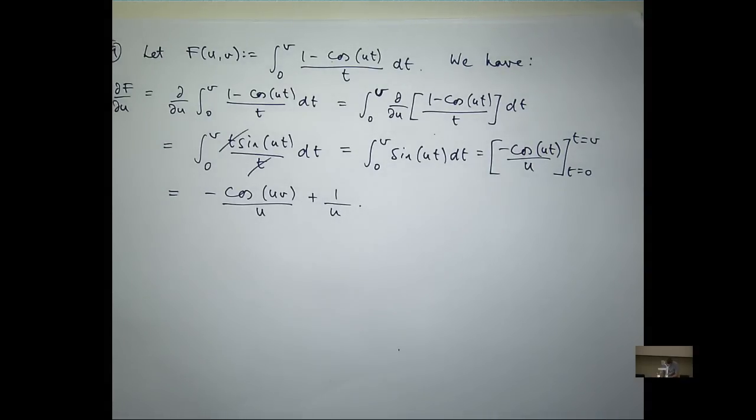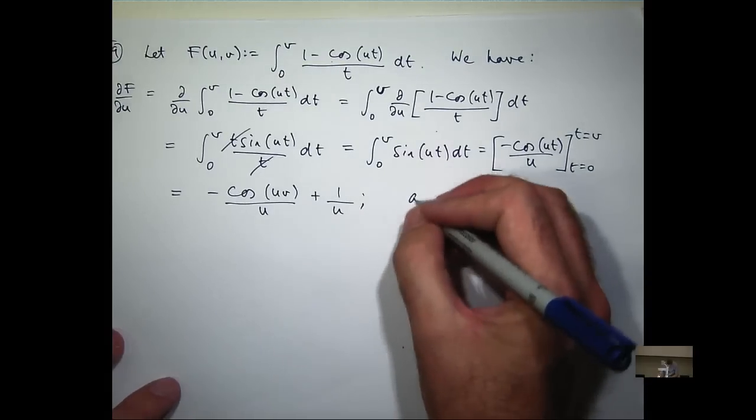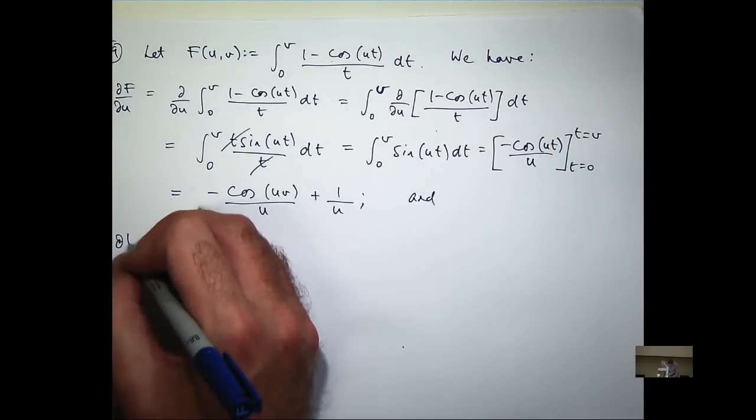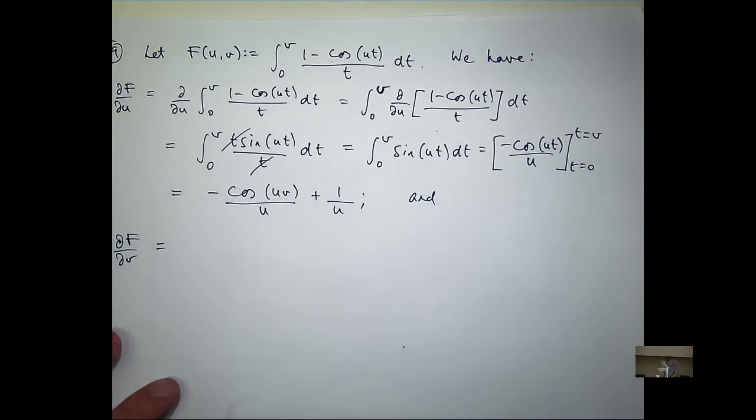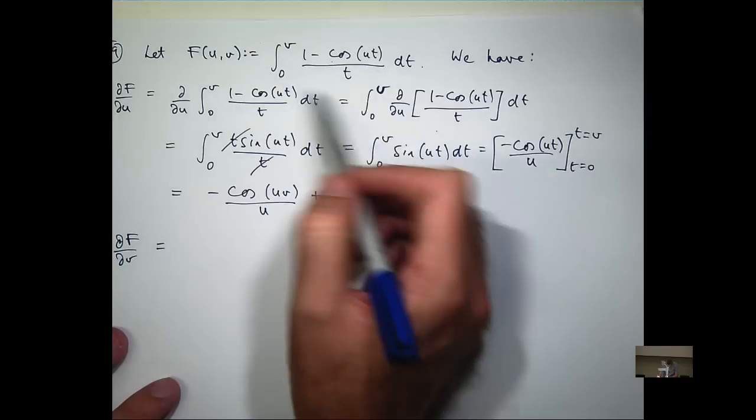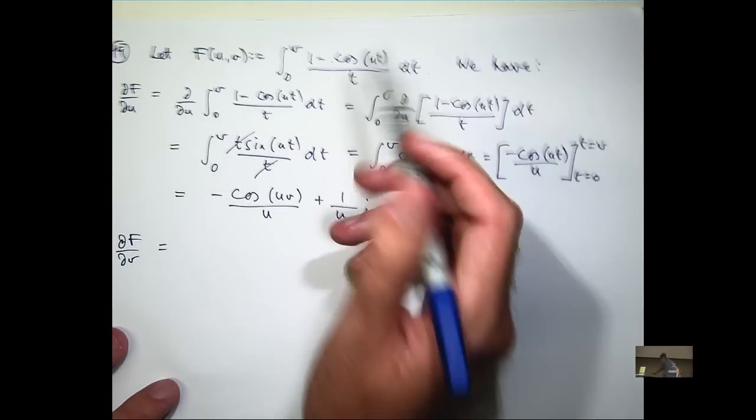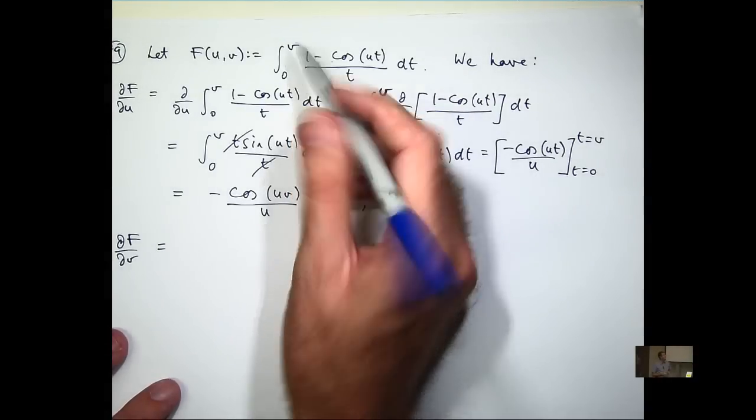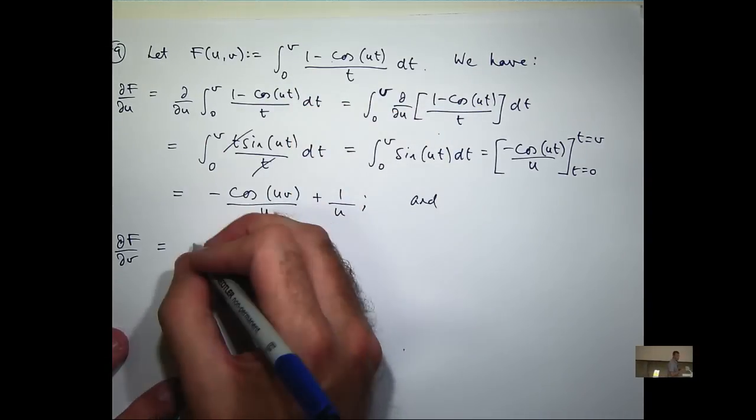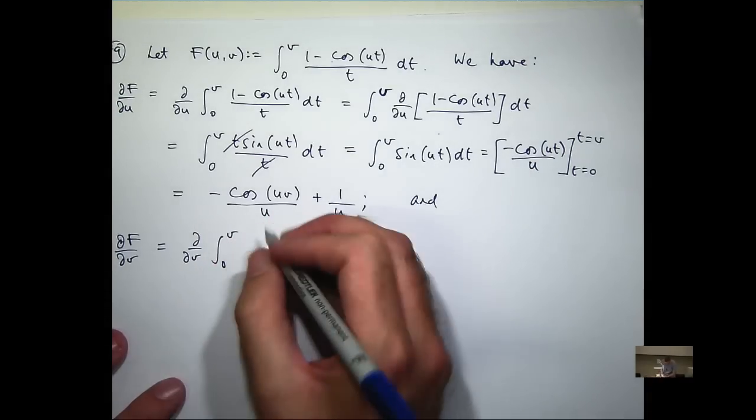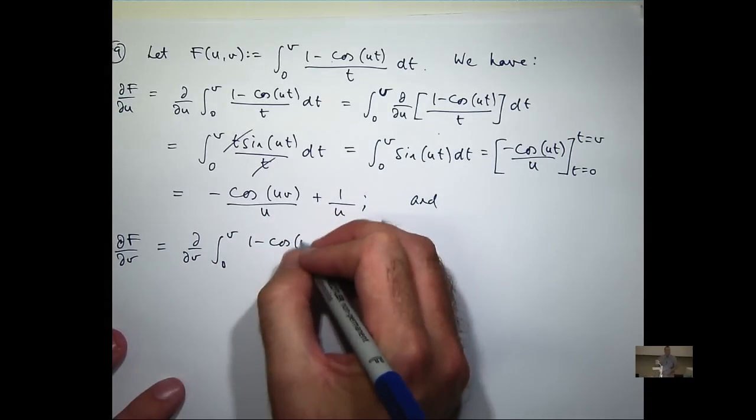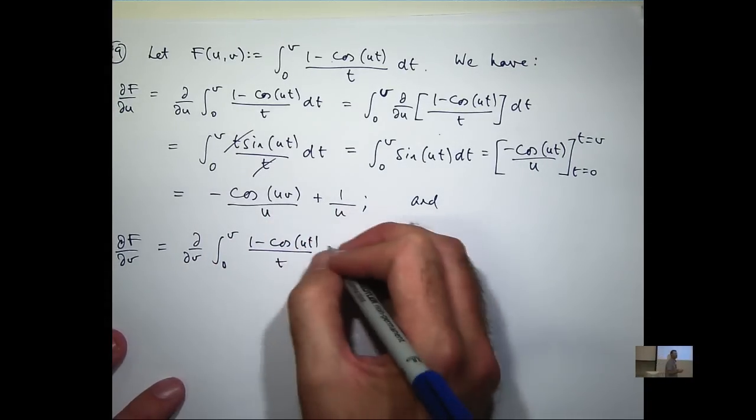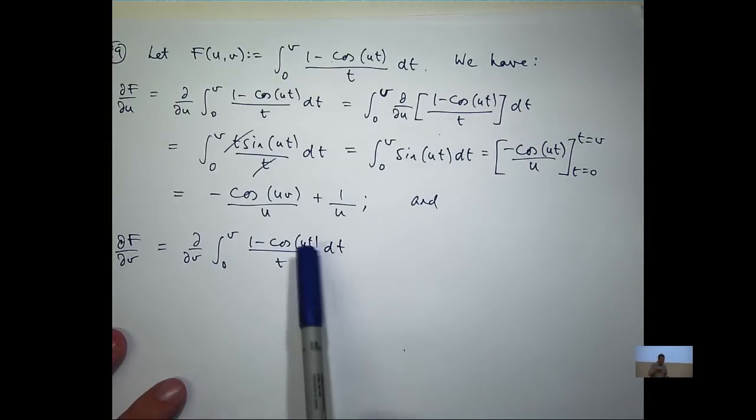Let's look at the other partial now, ∂F/∂v. So let's differentiate this partially with respect to V. We notice the V is at the upper limit of integration. So it's a fundamental theorem of calculus. So that means we get rid of the integral sign, replace the dummy variable T with V, and just write it down.